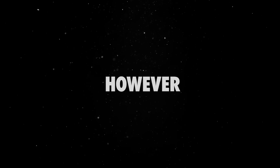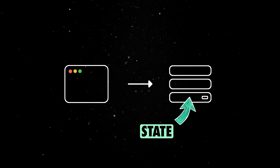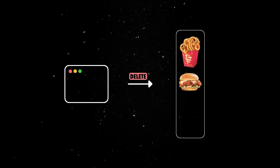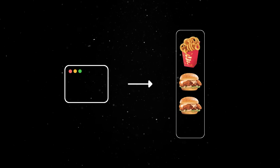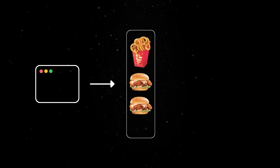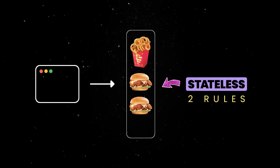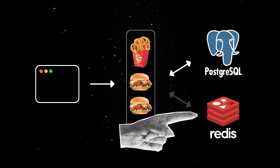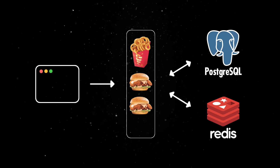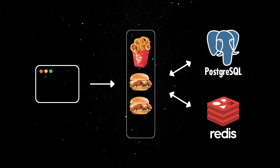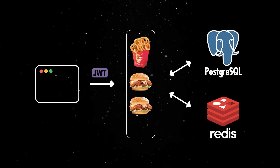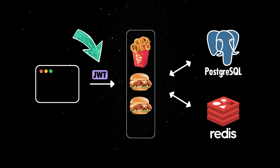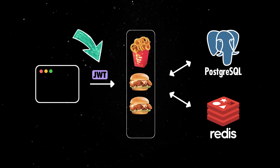However, we often need to store state associated with user actions. The most common example is a shopping cart, where the client can add, remove, or modify items. Our services can still be stateless as long as two main rules are followed. First, the state must be stored externally, either in a database or a memory cache. Second, some sort of identification — like a JSON Web Token — must be associated with each user so that any subsequent request can be correctly mapped to the correct shopping cart entity.